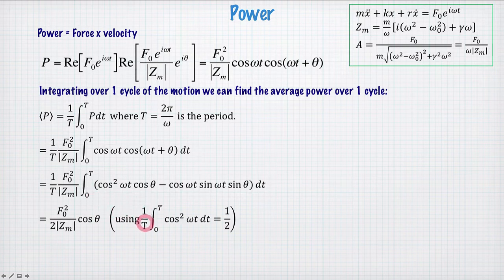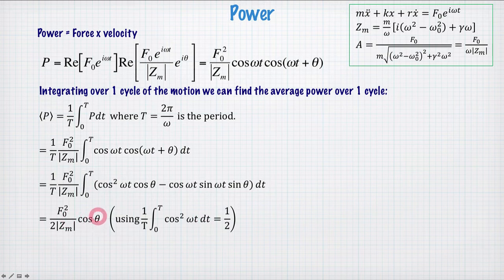So in fact, 1/T integral from zero to T, cos²(ωt) is a half. So we can use that to replace the integral of cos²(ωt), and we get a factor of 2 down the bottom here, and a cos(θ).